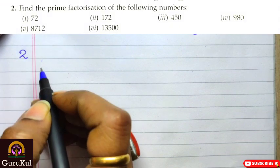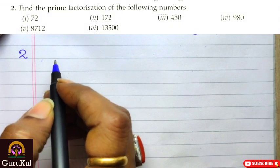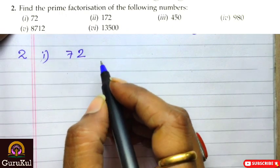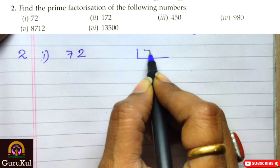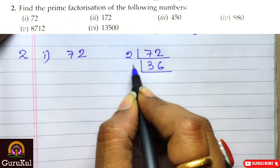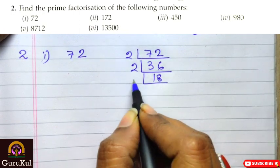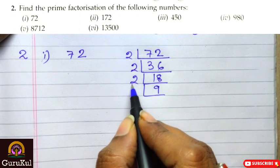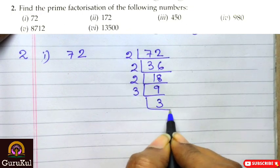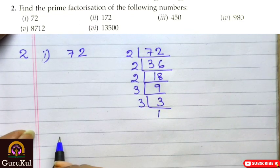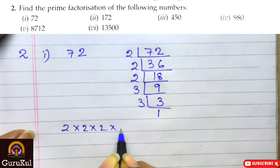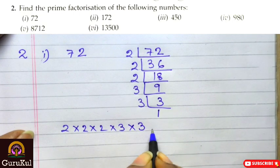Question number 2: we have to find the prime factorization of the following numbers using the division method. First number is 72. Starting with 2: 72 ÷ 2 = 36, ÷ 2 = 18, ÷ 2 = 9. Now 9 is not divisible by 2, so we go to 3: 9 ÷ 3 = 3, ÷ 3 = 1. Hence the prime factorization of 72 is 2 × 2 × 2 × 3 × 3.